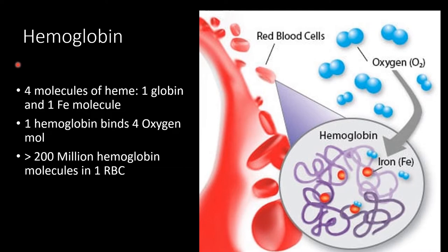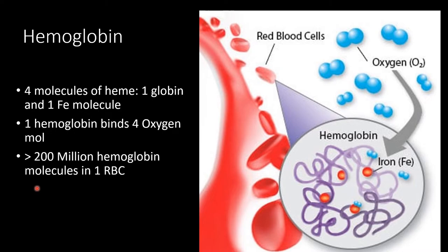Hemoglobin comprises around 35 percent of RBC mass. Each hemoglobin molecule is composed of four heme molecules, one globin molecule, and one iron molecule. One hemoglobin molecule binds four oxygen molecules. In general, there are more than 200 million hemoglobin molecules in one RBC, and times four gives the oxygen-carrying capacity.